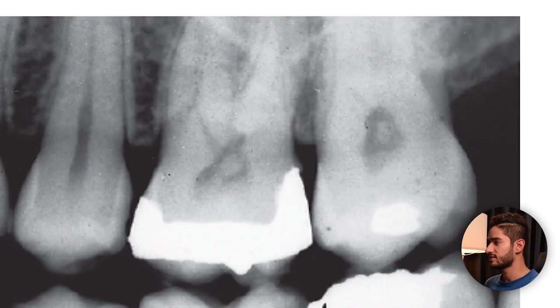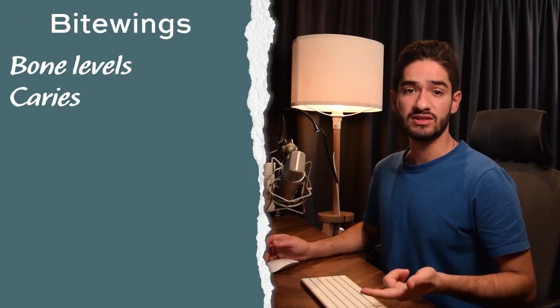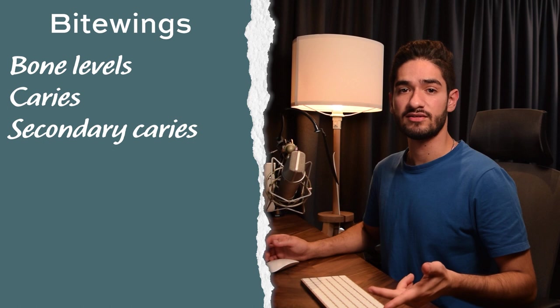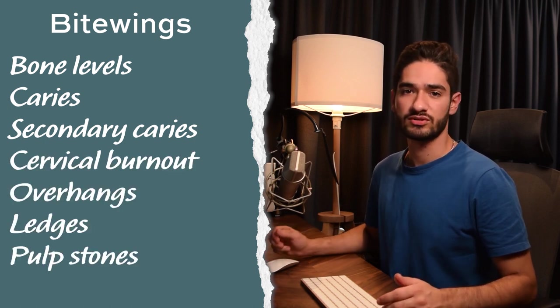The fifth and final thing to check is the pulp. You want to check the size of the pulp chamber and look for pulp stones that might affect any endodontic treatment. You can see pulp stones on the back molars here — seeing them might explain why a tooth isn't responding to sensibility testing. Patients who brux also tend to have pulp stones. To summarize, the things to note on a bite wing are: bone levels, caries, secondary caries, cervical burnout, overhanging restorations, ledges, and pulp stones.